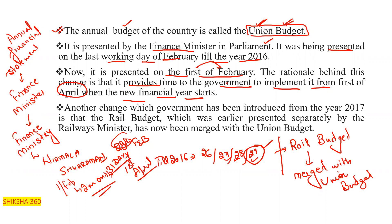Another change introduced from 2017 is that the Rail Budget, which was earlier presented separately by the Railway Minister, has now been merged with the Union Budget.